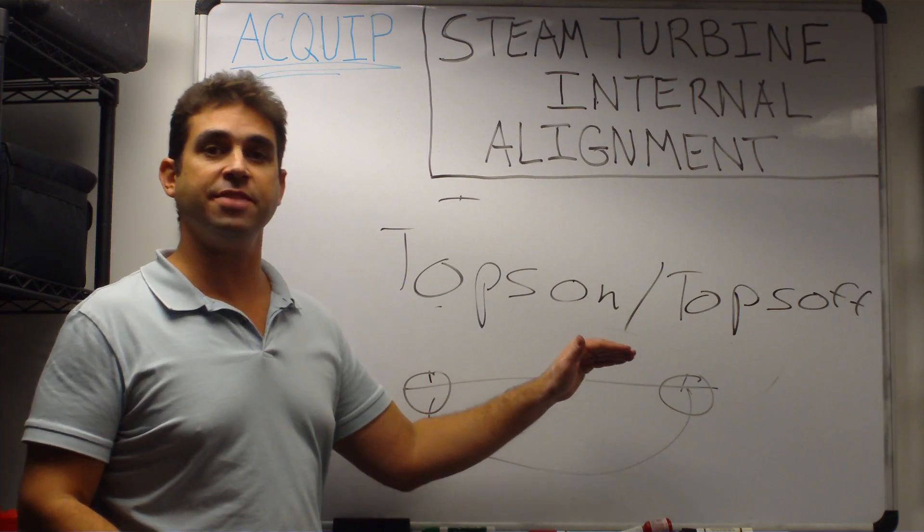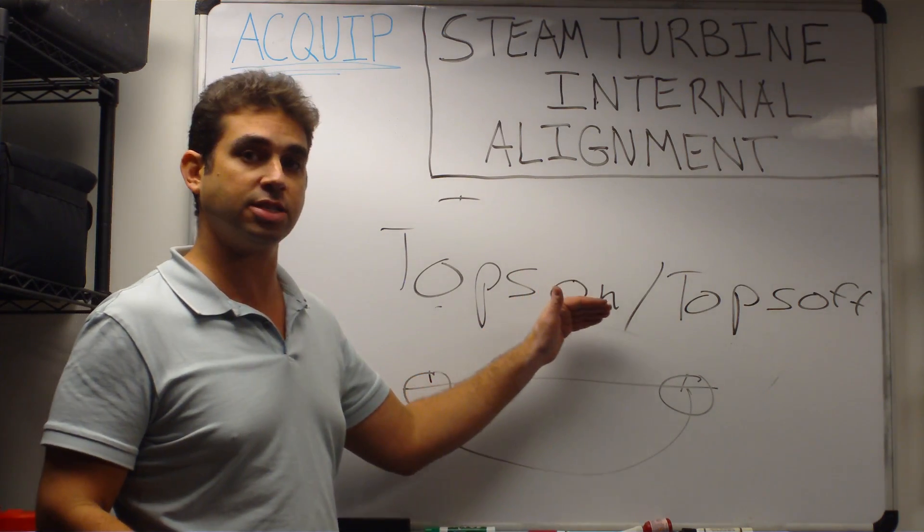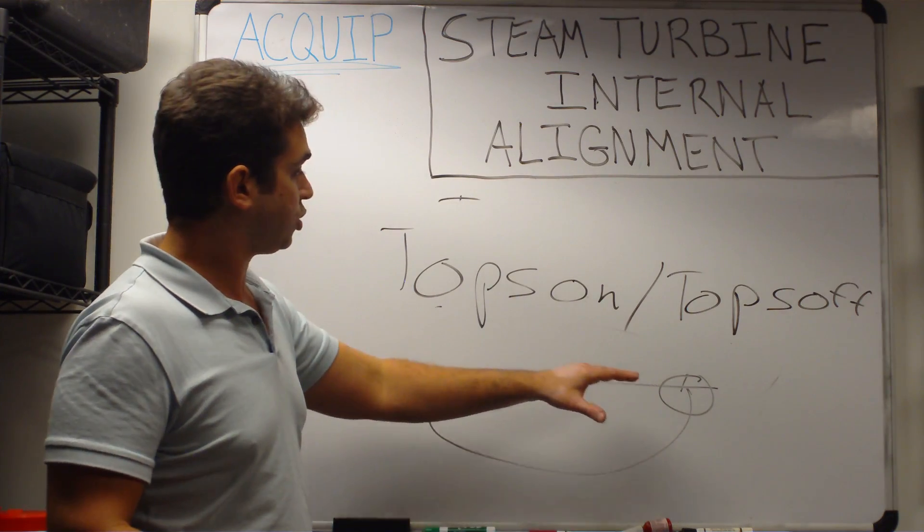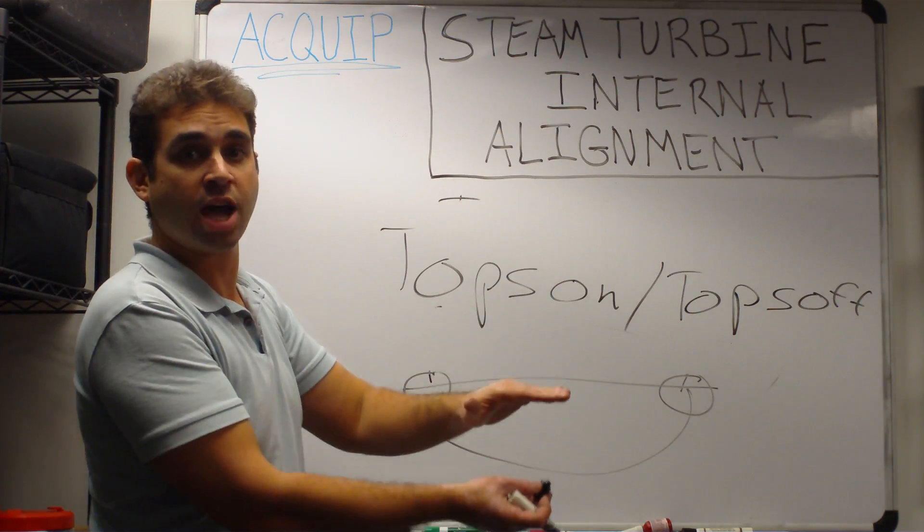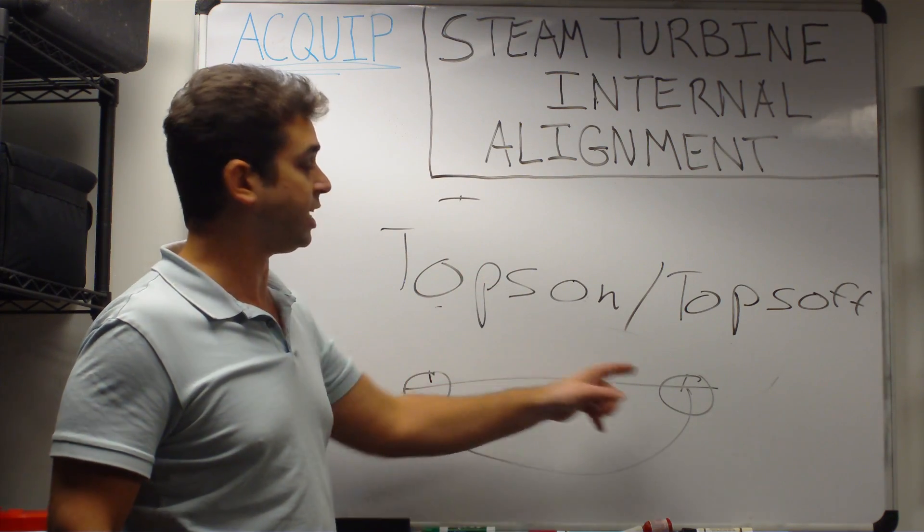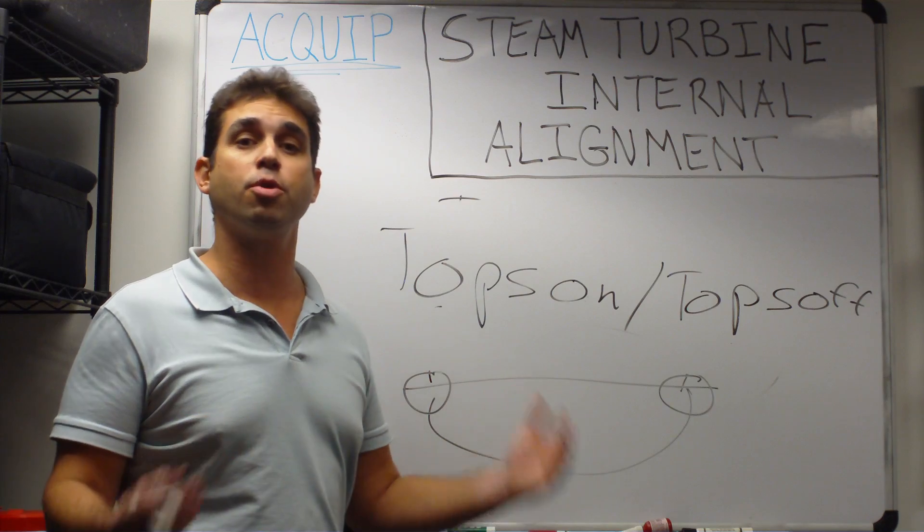We calculate the deviation from the tops on readings to the tops off readings so that we know what that change is when the top goes on to the top being off. We take all of our readings to do all of our moves with the top off the turbine.